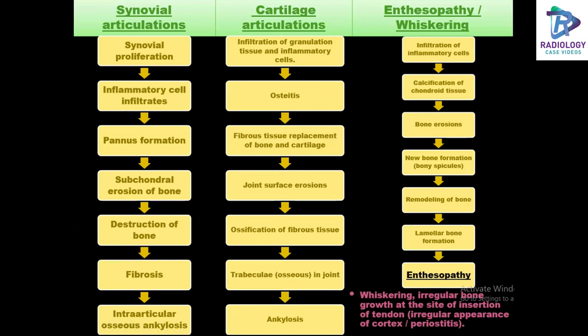Coming to the synovial articulations, there will be synovial proliferation, pannus formation, and subchondral bone erosions, leading to intra-articular osseous ankylosis. Coming to the cartilage articulations, osteitis results in fibrous tissue replacing the bone and cartilage, forming trabeculae in the joint, finally leading to ankylosis.